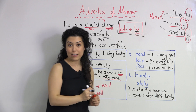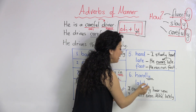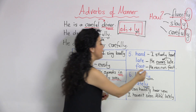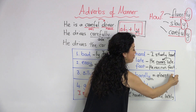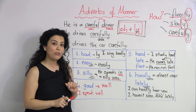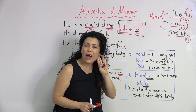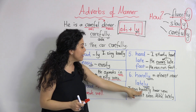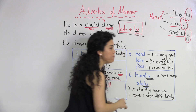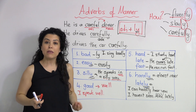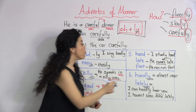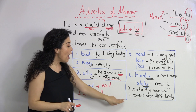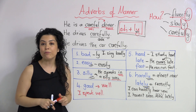The last exceptional case: 'hardly' and 'lately' do end in -ly but have completely different meanings. 'Hardly' means 'almost never' and has a negative meaning. For example: 'I can hardly hear you' — meaning I can't hear you, your volume is very low. Another example: 'I can hardly rest,' meaning I work a lot. 'Lately' means 'recently' or 'these days.' For example: 'I haven't seen Mike recently' — or 'I haven't seen him lately.'